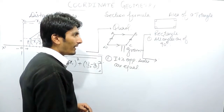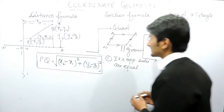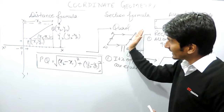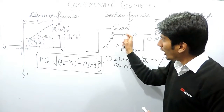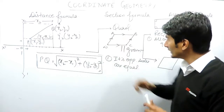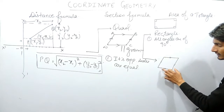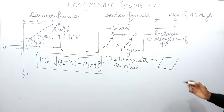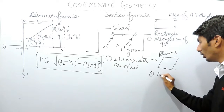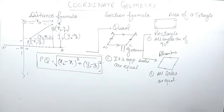Using the same parallelogram I can make a rhombus. For a rhombus, I have shifted the sides so that all four sides become equal. So in this case all sides are equal, and obviously the opposite sides must also be parallel. The basic property of a rhombus is that all its sides are equal.